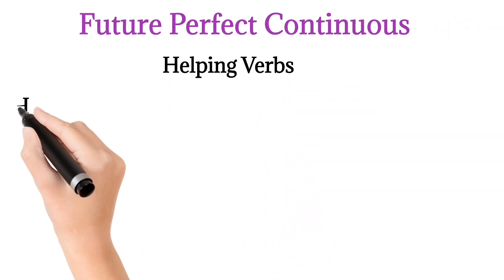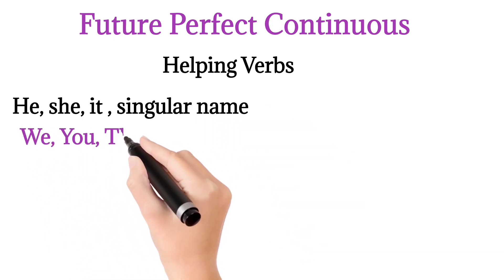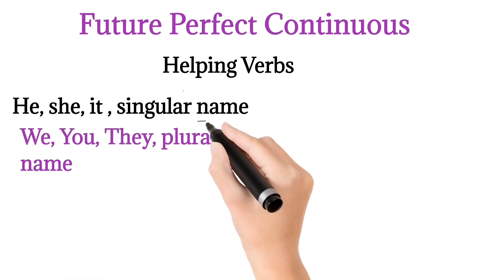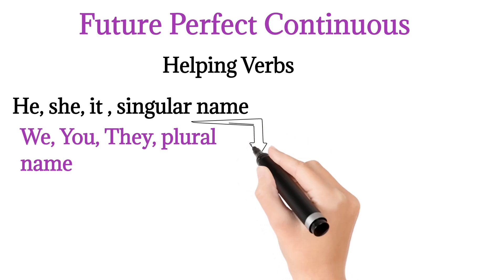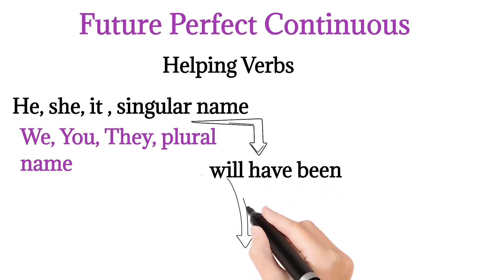Helping verbs used in the Future Perfect Continuous Tense: All helping verbs will be followed by will have been, then first form of verb plus -ing will be used.